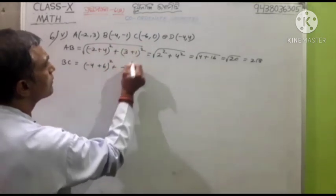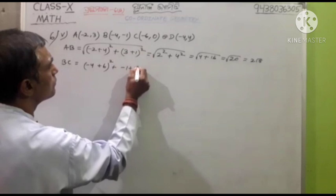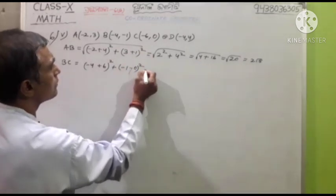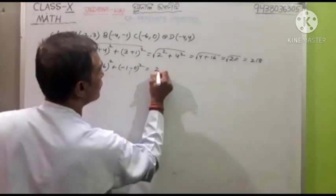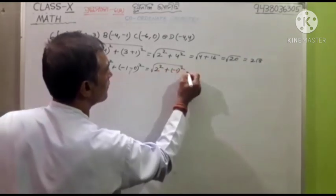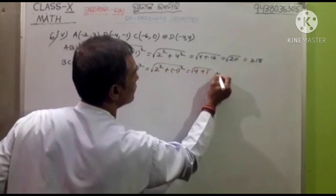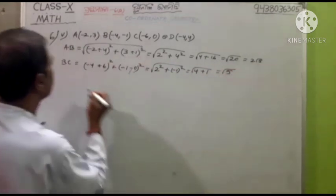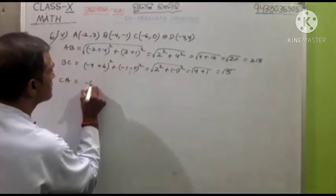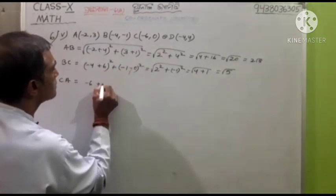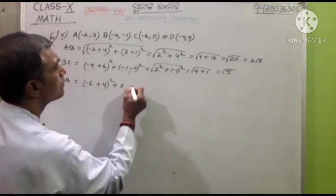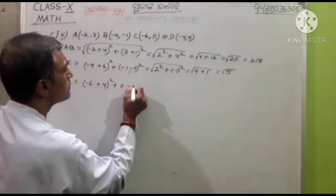Then minus 1 plus 0, then minus 0, plus 0 is equal to square. Now 2 square plus minus 1 square. Now root over is equal to 4 plus 1. Now root over is equal to root 5. Now root over minus minus 4 square.